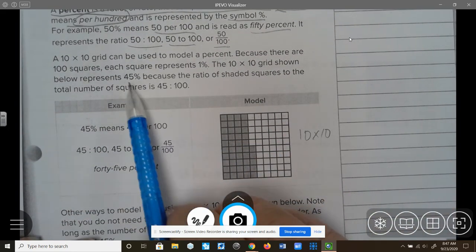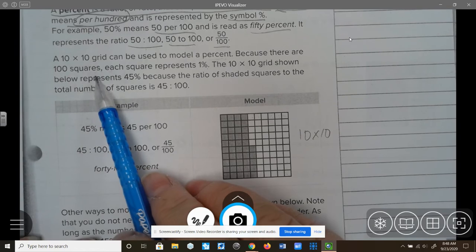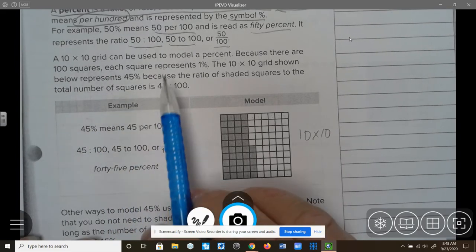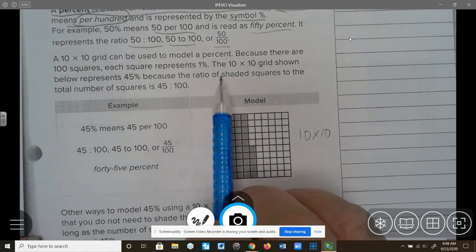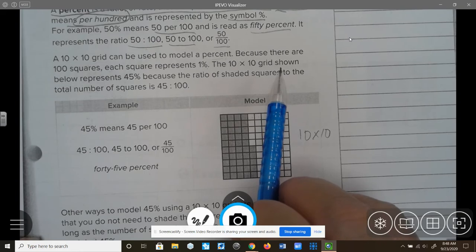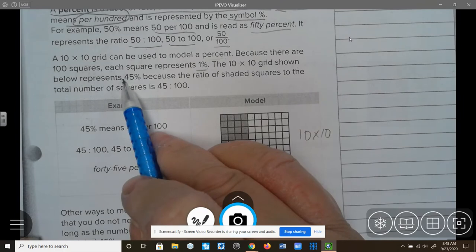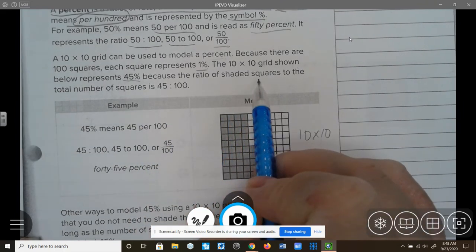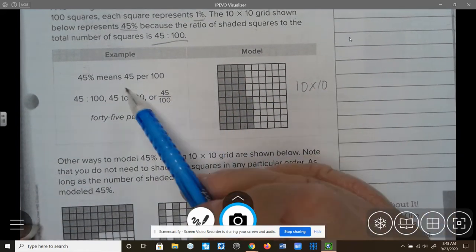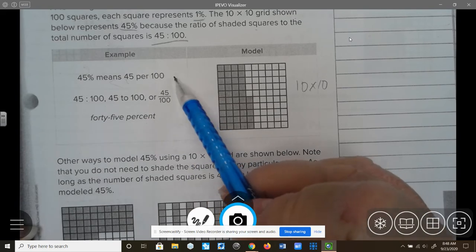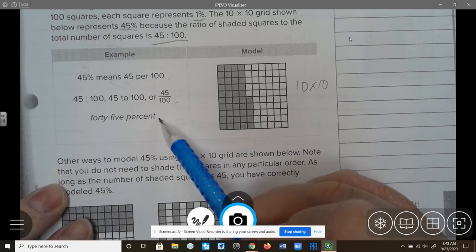We are going to start off with a grid. A 10 by 10 grid can be used to model a percent because there are 100 squares. We know that 10 times 10 is 100, so it makes it really easy to show and represent a model of a percent. The 10 by 10 grid, each square represents 1%, and the 10 by 10 grid shown below is 45% because the ratio of shaded squares to the total number is 45 to 100.